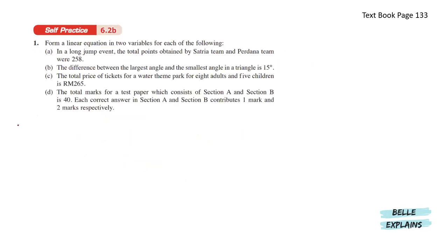Moving on to self-practice 6.2b. Form a linear equation in two variables for each of the following. In a long jump event, the total points obtained by Satria team and Perdana team were 258. So here we have the total is a sum of Satria plus Perdana.